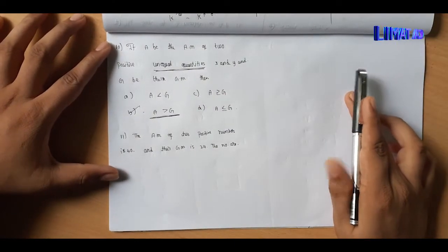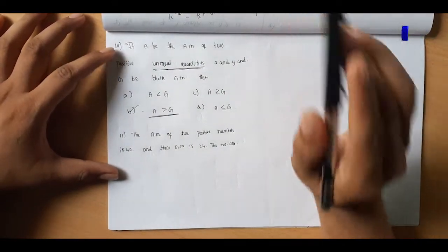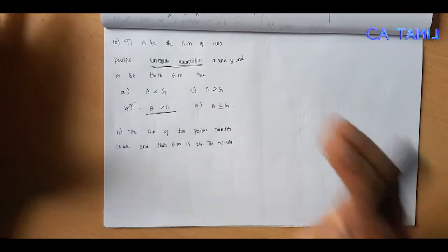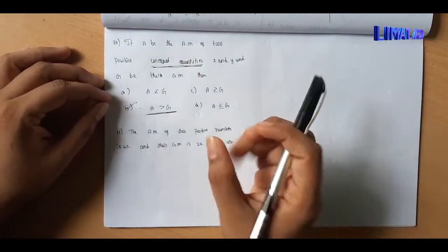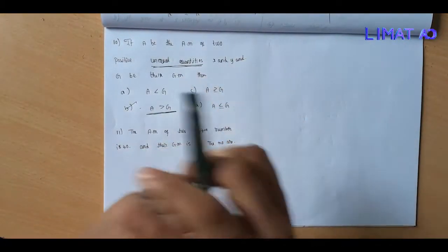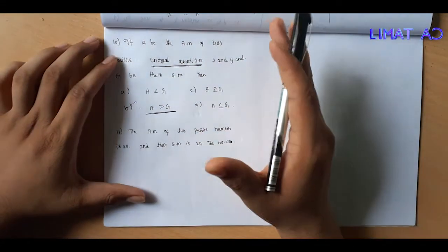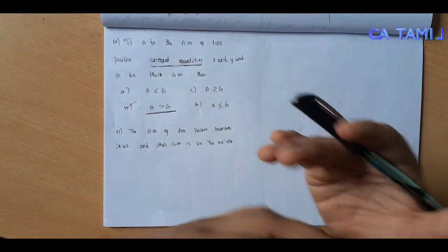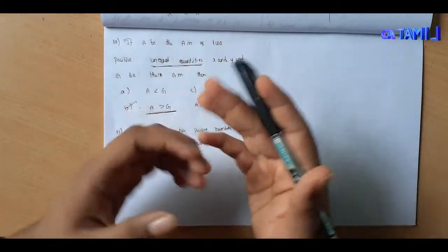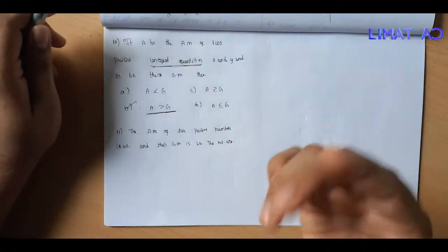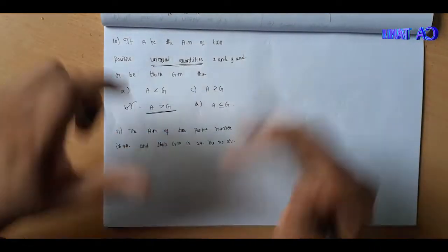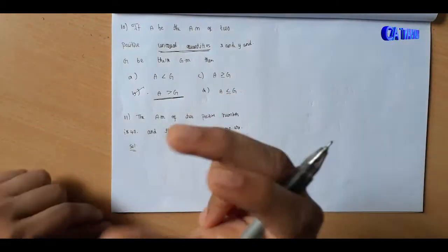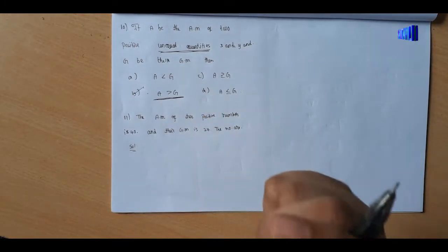The AM of two positive numbers is 40 and the GM is 24. We have two positive numbers where AM equals 40 and GM equals 24.